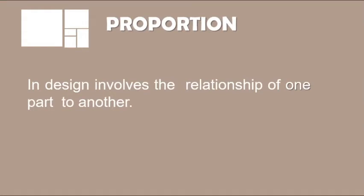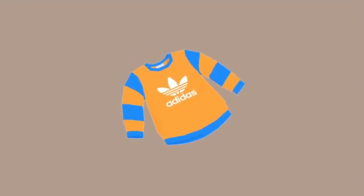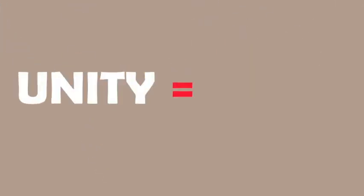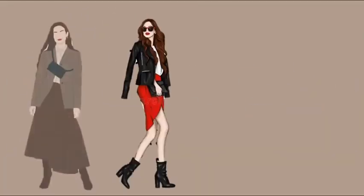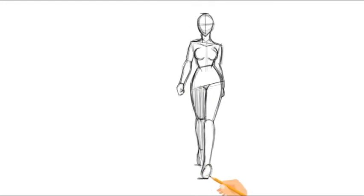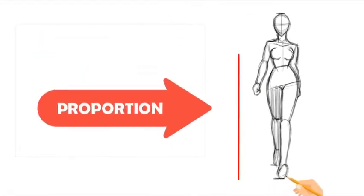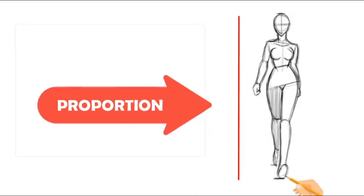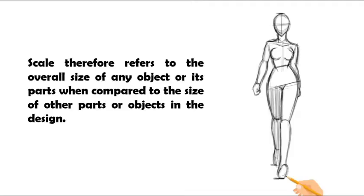In clothing, proportion creates the feeling of unity when all of the parts — either sizes, numbers, or amounts — relate well with each other. For example, a longer jacket width works with a longer skirt. The same goes with long pants, which works better with a short jacket or crop top. Also, when drawing or sketching the human form, proportion refers to the size of the head in comparison to the rest of the body. Scale therefore refers to the overall size of any object or its parts when compared to the size of other parts or objects in the design.